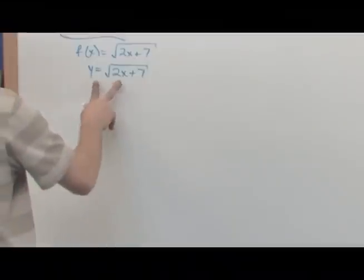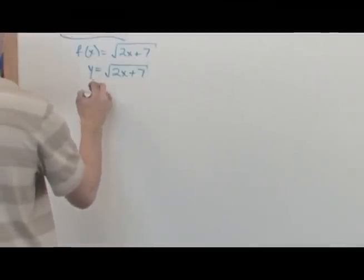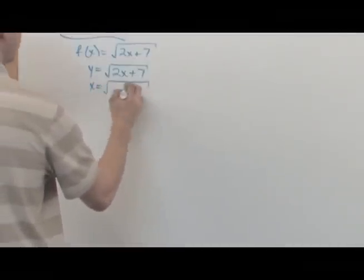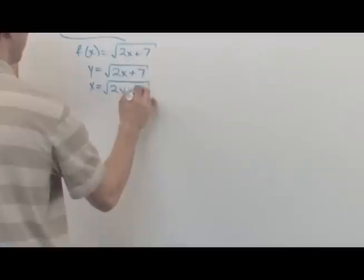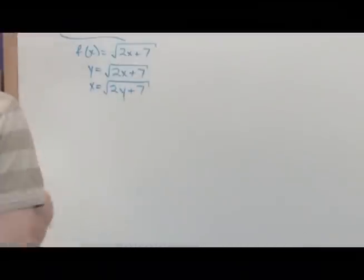Okay, next step is replace x and y and flip them. x is equal to the square root of 2y plus 7. All I did was flip the location of x and y.